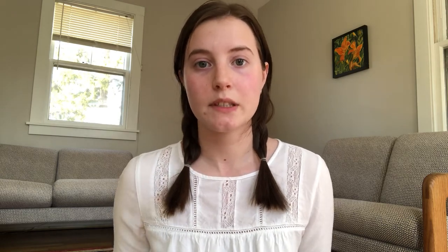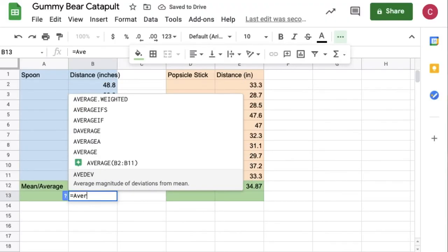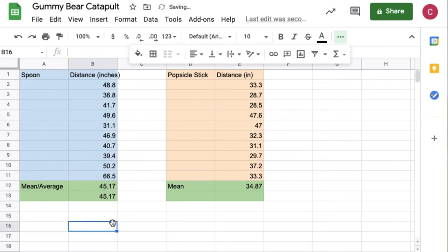Just to double check let's use the average function on catapult one which we calculated in two steps. You see when I type equals average and highlight those numbers we get the same answer that we found before. So now I know that the catapult I made out of the spoon shoots further on average than the catapult I made out of the popsicle stick because the mean distance launched is bigger.